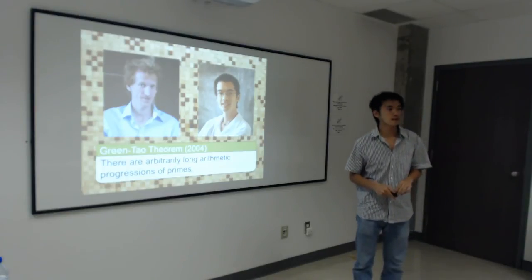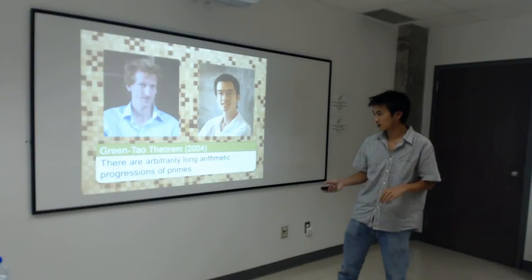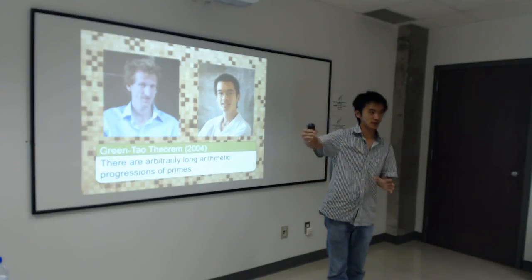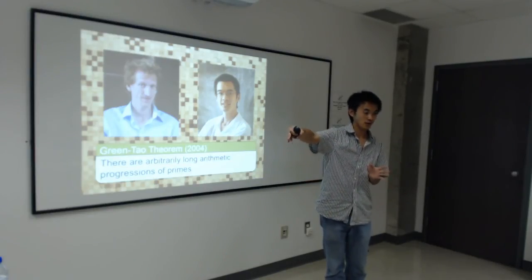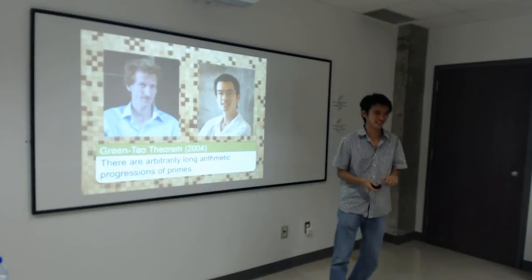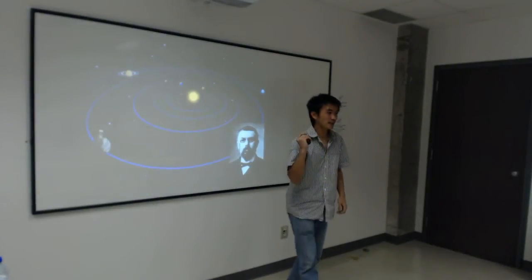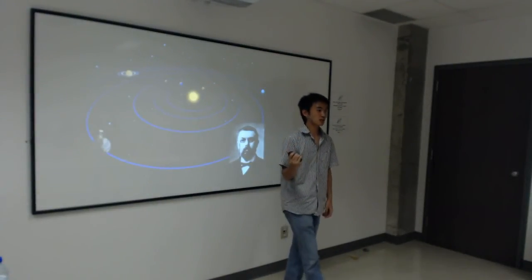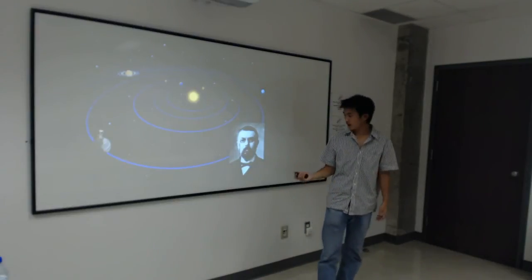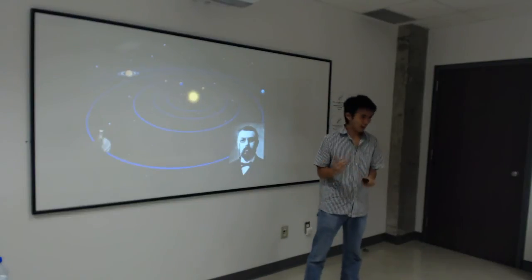What does 'arbitrarily long arithmetic progressions in the primes' mean? For every n, there is an arithmetic progression of n numbers all made of prime numbers. Now, I couldn't end this section on ergodic theory without talking about the founder of ergodic theory, who is Henri Poincaré. The story of how he came up with it is also a very interesting one.